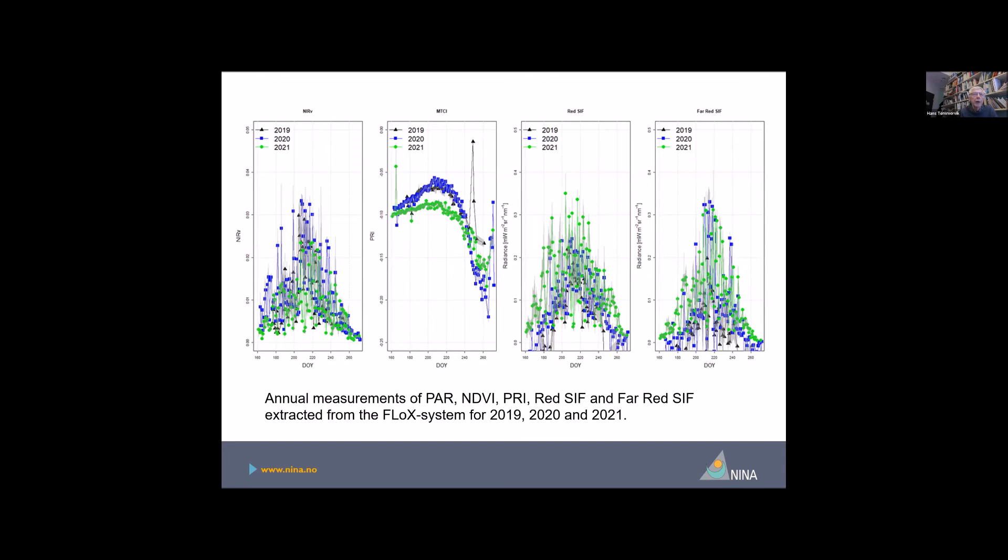And this is also other indices we can extract from the spectrometer, for instance, the NIRv vegetation index, which is now actually a new coming vegetation index that is better for vegetation index than the NDVI to follow, together with SIF, the development in gross primary production on the surface. And you see that a lot of variation in the red SIF and also far red SIF during the course of the growing season and also the differences between the years.